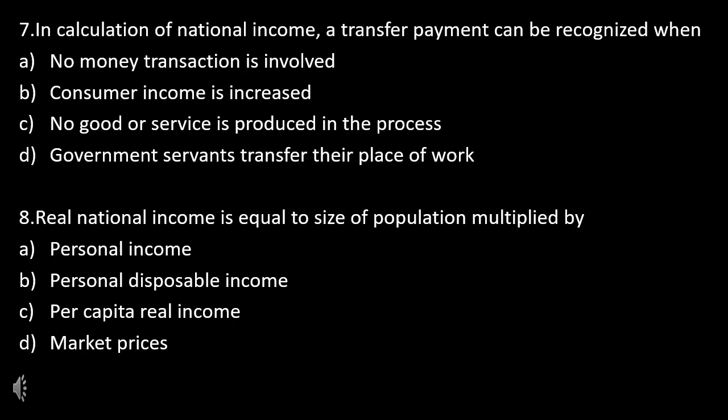Question 7: In calculation of national income, a transfer payment can be recognized when — no money transaction is involved, consumer income is increased, no good or service is produced in the process, or government servants transfer their place of work?